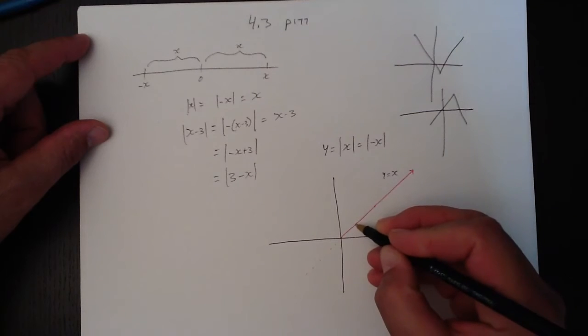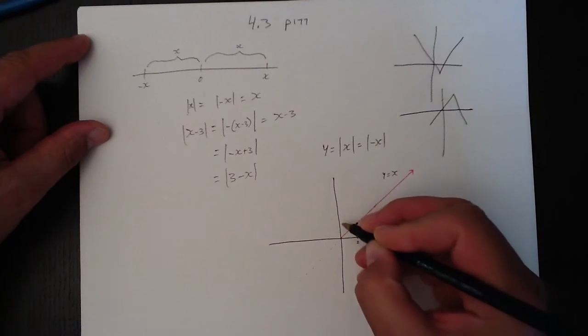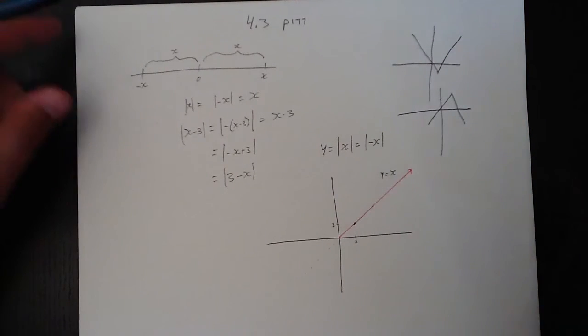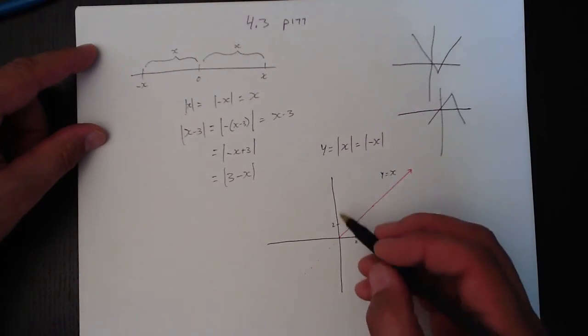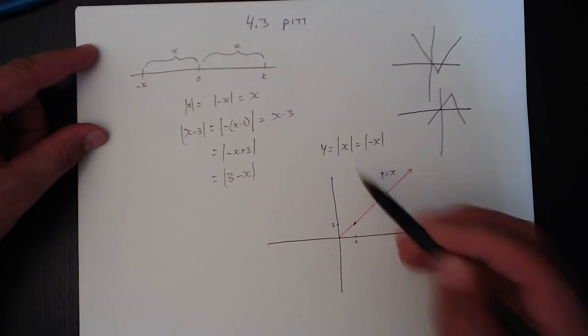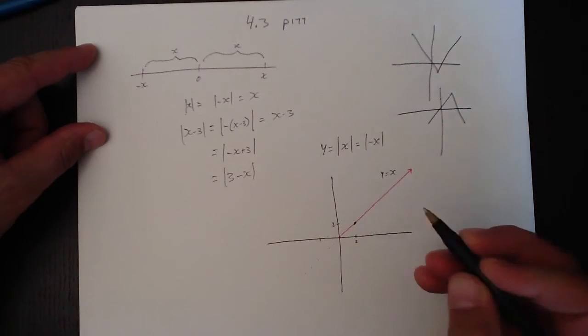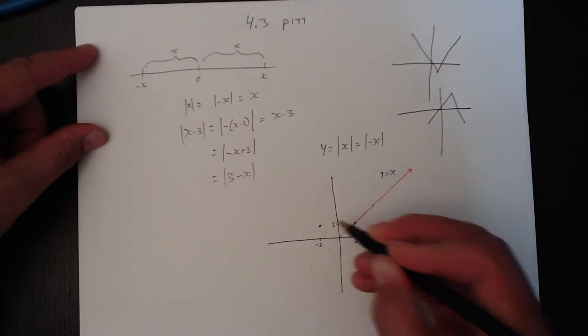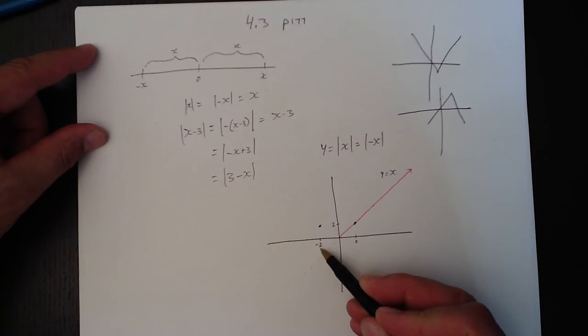So, if we take a point here, let's just call that 2, 2. y equals x, 2, 2. Yeah, that makes sense. However, if it was described this way, y is the absolute value of x, then negative 2 over here, the absolute value of negative 2 is 2.